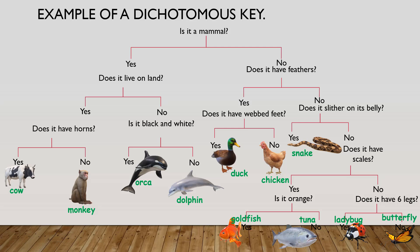I've gone through a series of steps. I've asked: does the non-mammal have feathers? Does it have webbed feet? Does it slither on its belly? Does it have scales? And so on. Now all 11 animals are in their own group, so I have a working dichotomous key.